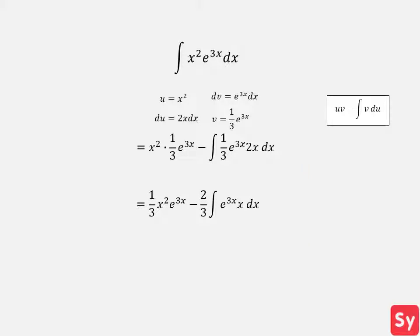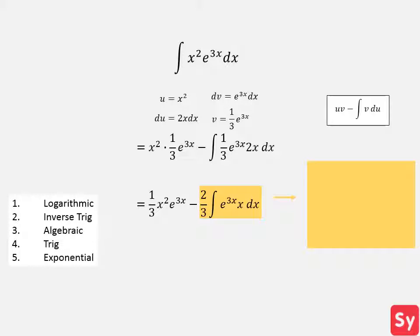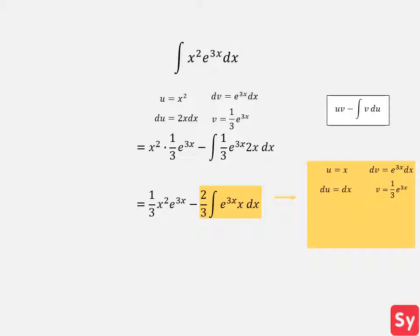Now we'll focus on solving this integral. We will need to use integration by parts again to do this. We refer back to the list and see that there is an algebraic expression in the integrand. So we set u equal to x and dv equal to e to the 3x dx. We then calculate du and v.